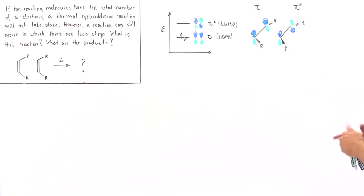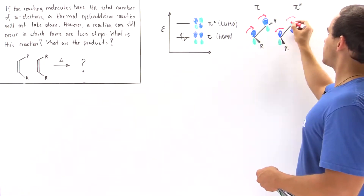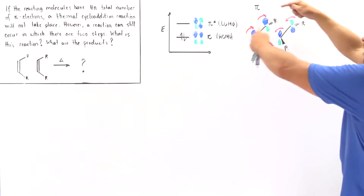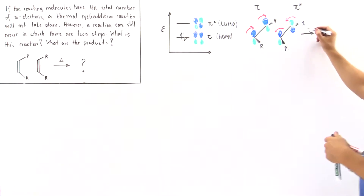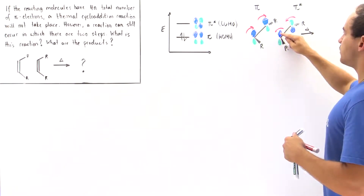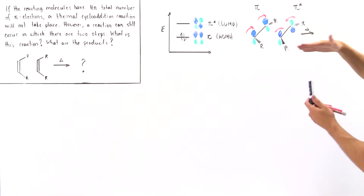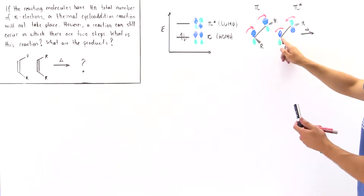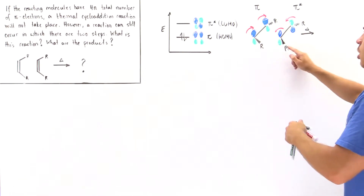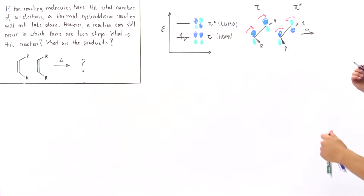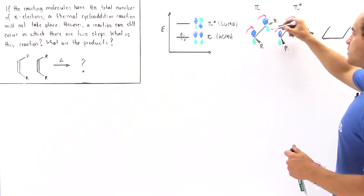In step one, let's suppose the lobes rotate clockwise on one end and counterclockwise on the other. Under thermal conditions, the blue lobe from one molecule rotates toward the blue lobe of the other molecule. Because both are the same phase, they overlap constructively and form a bond between these two carbons.